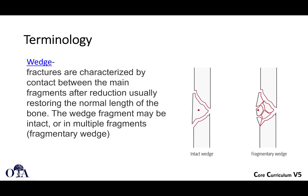A wedge fracture is also called a butterfly fragment. This is a femur fracture with a very typical biomechanical fracture pattern. We call it a wedge fracture, but a lot of times we'll call this a butterfly segment — it's triangular, not sure why it's called butterfly — and that can be comminuted as well, as shown on the right.